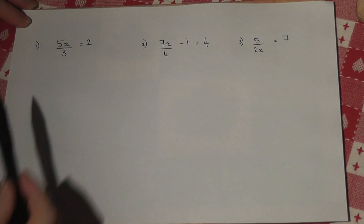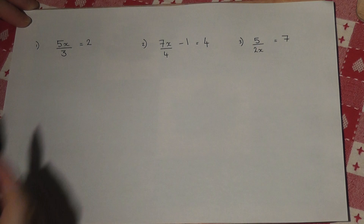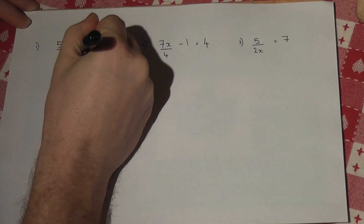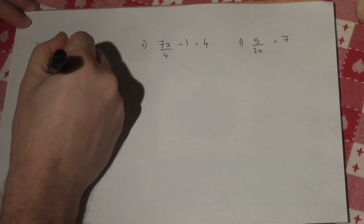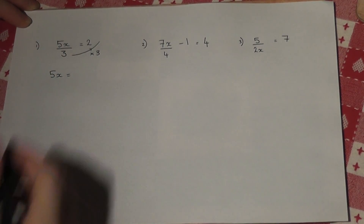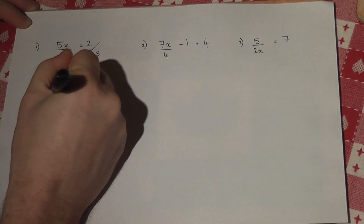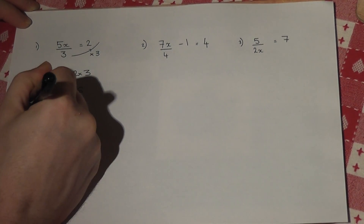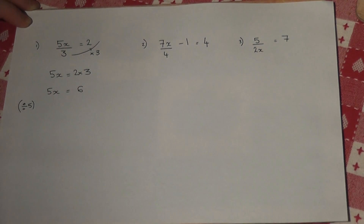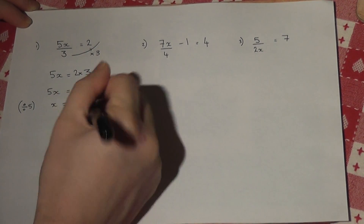When you have an equation with quite a simple fraction in, the method is to multiply up by the denominator. So if I times up by 3, then I end up with 5x equals 2 lots of 3, so 5x equals 6. I times up by the denominator, and then I finish off by dividing by the coefficient of x, so x equals 6 over 5, or 6 fifths.